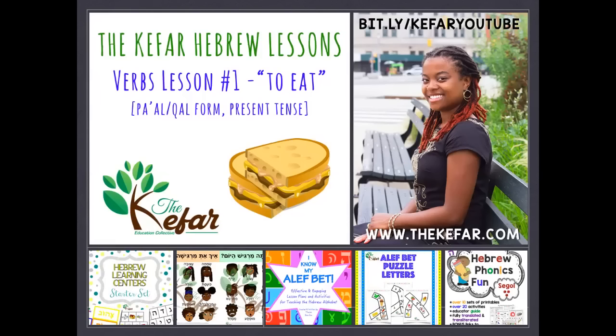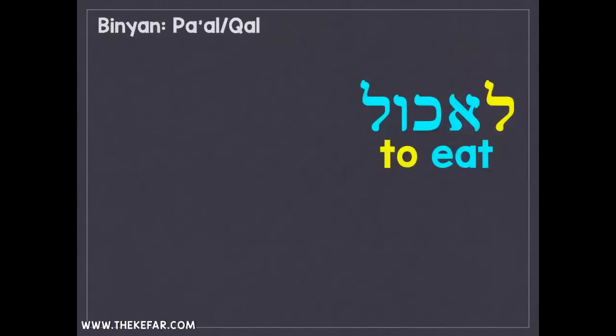Watch that one first so you can familiarize yourself with the terminology and get an understanding of how verbs work. Then come back to this video where we're going to get specific with one verb: to eat. The Binyan of this verb is Pa'al, which is the simplest form of the Hebrew verb, and we're going to look at it in the present tense.